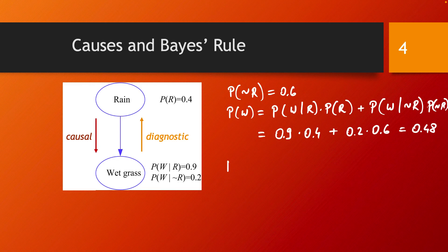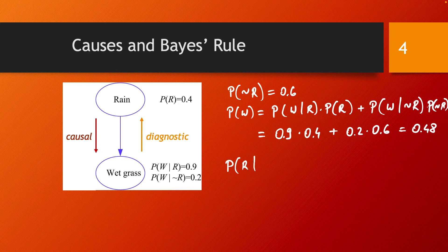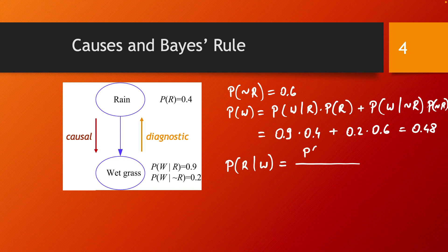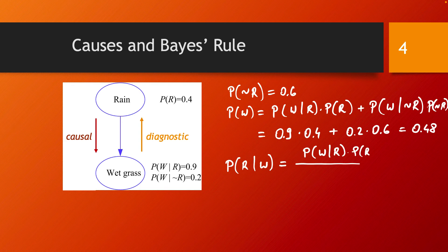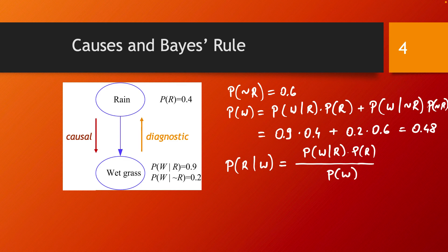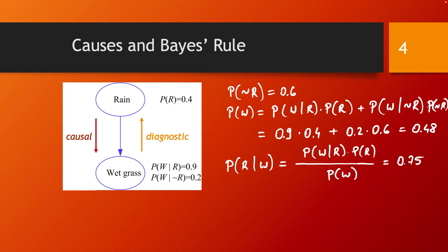We can calculate the probability that it rained when we observed the grass being wet. We write the probability of having had a rainy day given that we observed the grass was wet. Using Bayes' rule, this is equal to the probability of having wet grass on a rainy day times the probability of a rainy day divided by the probability of observing the grass being wet. We can plug in all these numbers and calculate this to be 0.75.